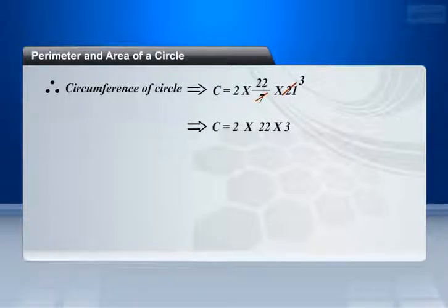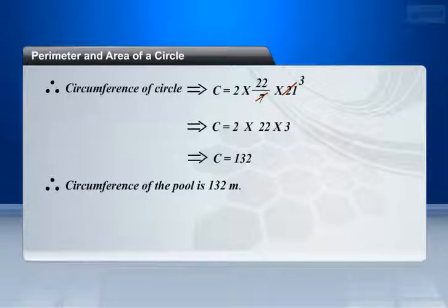This implies that C equals 2 × 22 × 3. This implies that C equals 132. Therefore, circumference of the pool is 132 meters.